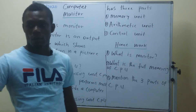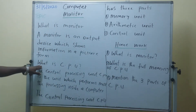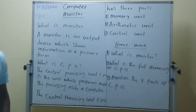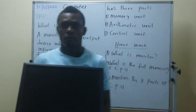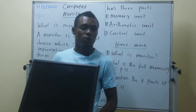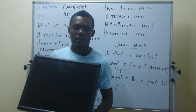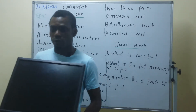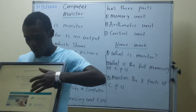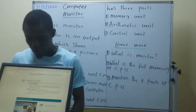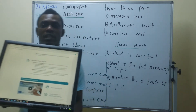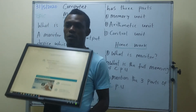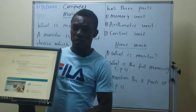So we have the CPU right here. Now I want to show you what a monitor is — this is a monitor. So this is what you are defining: a monitor is an output device which shows information in a picture form. Here you can see pictures and letters written on it. So this is called a monitor.